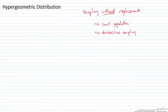The hypergeometric distribution is used when we have sampling without replacement. This is often the case when we have a small population or destructive sampling. If you have a really big population and you remove samples without replacement, the population is so big that removing a small sample doesn't really change its characteristics, so you would use the binomial distribution instead.